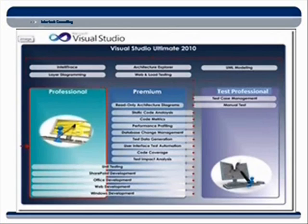I'm using Visual Studio Ultimate, and here's a quick visual breakdown of what that means and the different versions of Visual Studio that can be purchased. We've got the Professional Edition that includes unit testing, some SharePoint development, web development, and Windows development. Then there's the Premium Edition, which supports read-only architecture diagrams, code analysis, and code metrics.